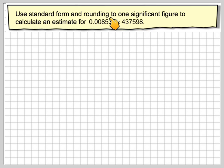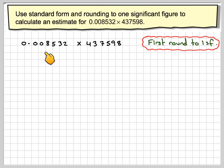Use standard form and round to one significant figure to calculate an estimate for 0.008532 times 437598. So we've got 0.008532 times 437598. First of all, we'll round each of these off to one significant figure.